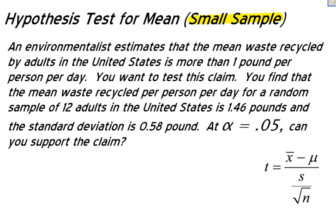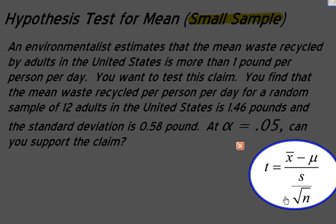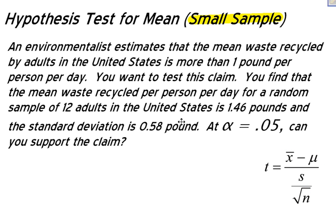Because I'm going to use a T-distribution, things are going to change just a little bit. My test statistic is going to use this formula. I'm going to get to this formula in a little bit, but let's go through the process. First of all, let's read the problem. An environmentalist estimates that the mean waste recycled by adults in the United States is more than one pound per person per day.